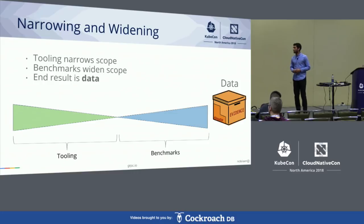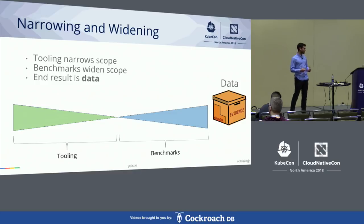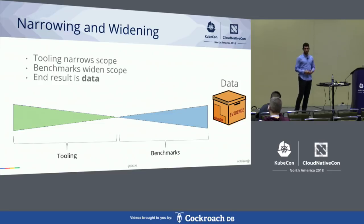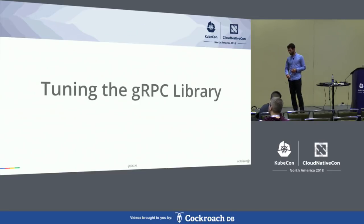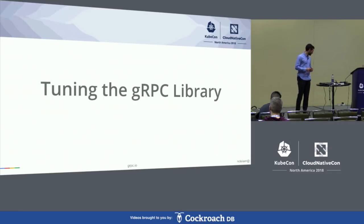Tooling narrows the scope of the problem until it becomes manageable to solve, and then benchmarking widens the scope to demonstrate the impacts. All this together gets packaged up as data — as a way to discuss, talk about, and show optimizations. Those were the high-level, general, library-application-agnostic points. They'll be coming back in the next section as well.